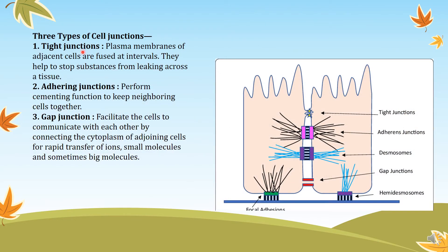Now, what are the different junctions? Since the cells have to be joined together and are closely packed, we can find three types of junctions between them. They are known as the tight junction, adhering junction, and gap junctions.